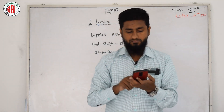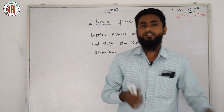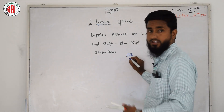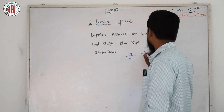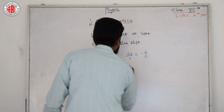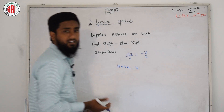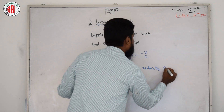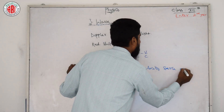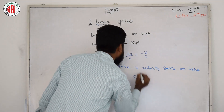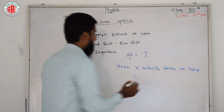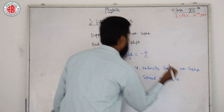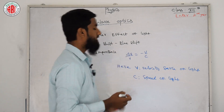This is the definition. Now the formula for the Doppler effect of light is: ΔV/V = −v/c. Here, v is the velocity of the source of light, and c is the speed of light. This formula is the key term related to the Doppler effect.